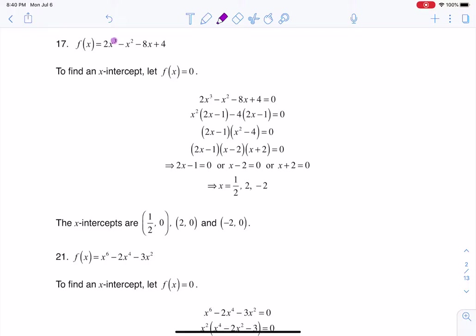Whenever you want to find an x-intercept you always have to let y equal 0. Now that we're in college algebra we'll say let f(x) equal 0. So I'm basically going to set this function to 0.